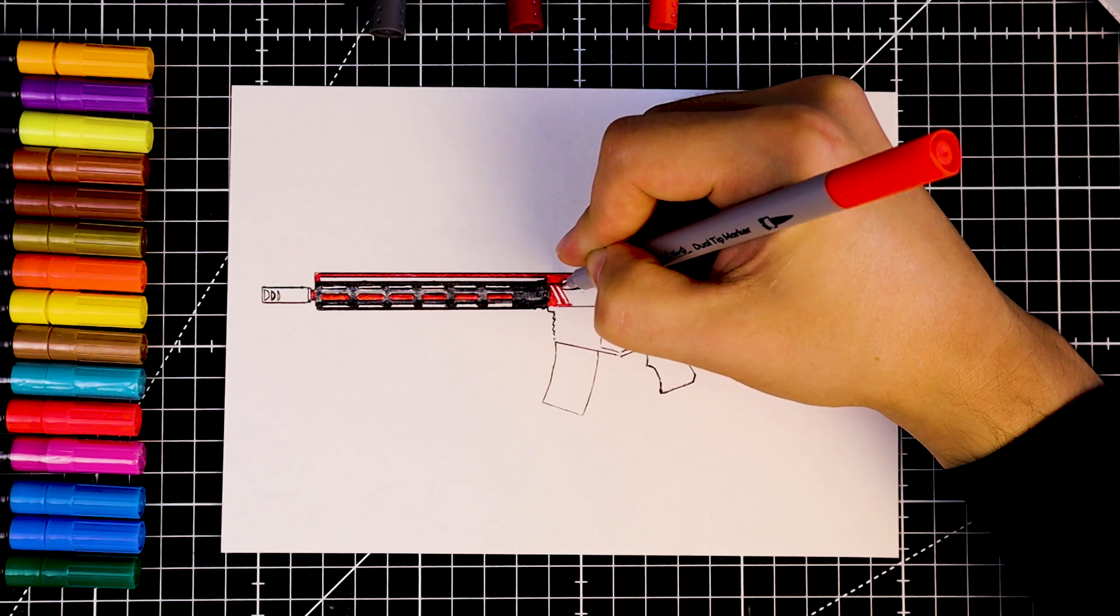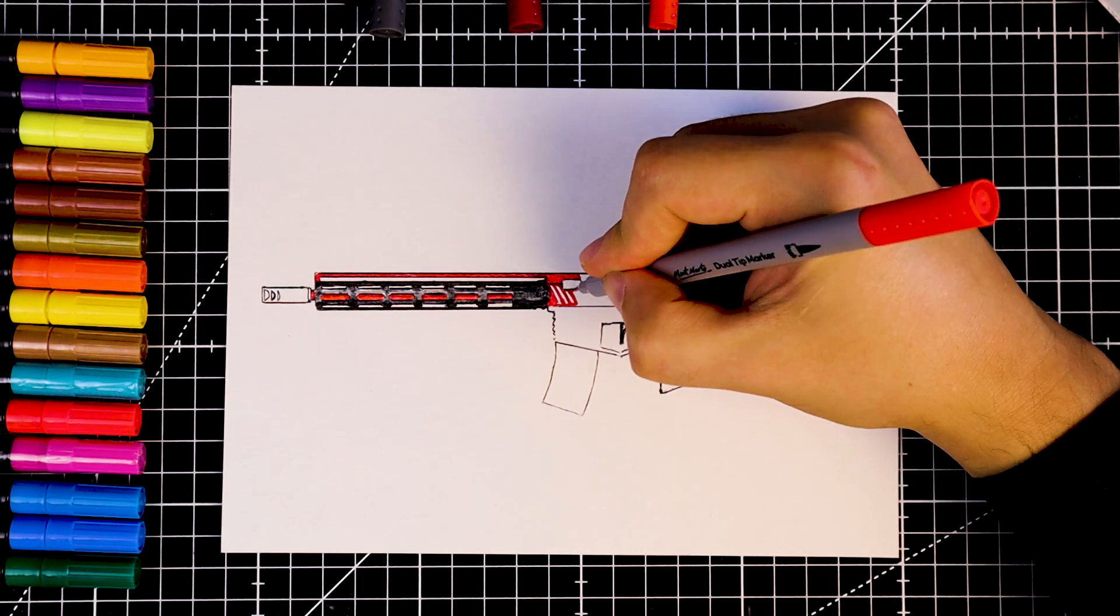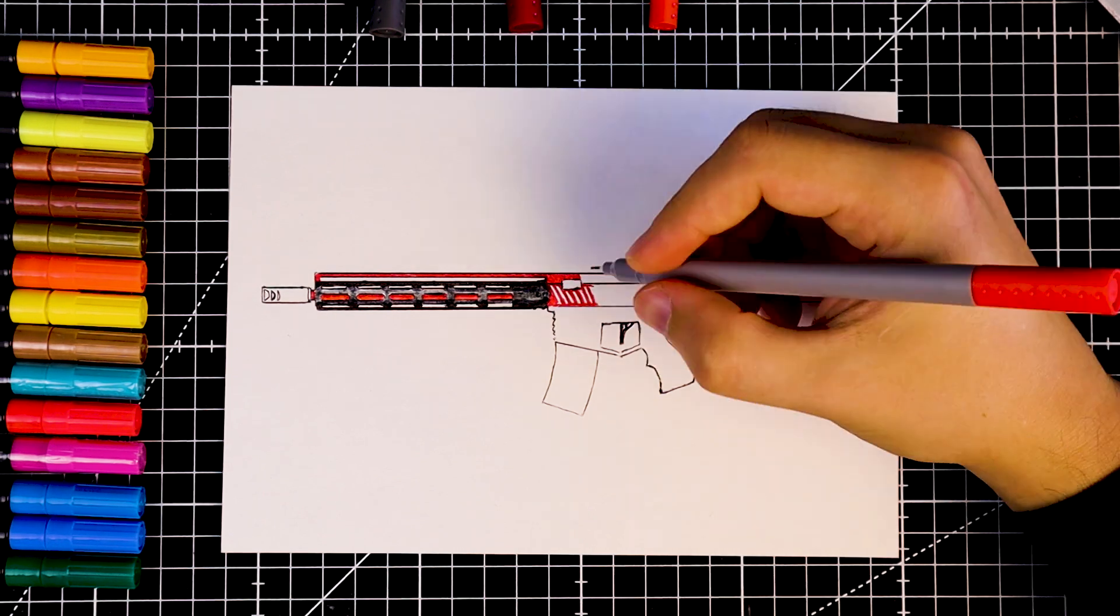Sporting rifles need to be lightweight. One way to achieve this is by making lots of holes. That's why our rifle has so many openings.